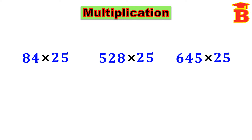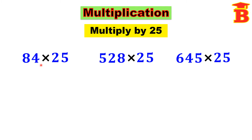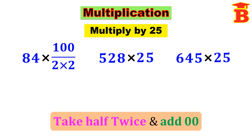Next let us multiply numbers by 25. This 25 is taken as 100 by 4, that is 100 by 2 into 2. That means we have to divide this number by 2 twice. So take half of this number twice, because in the denominator we have 2 into 2. And then multiply by 100, which simply means add double 0 at the back.